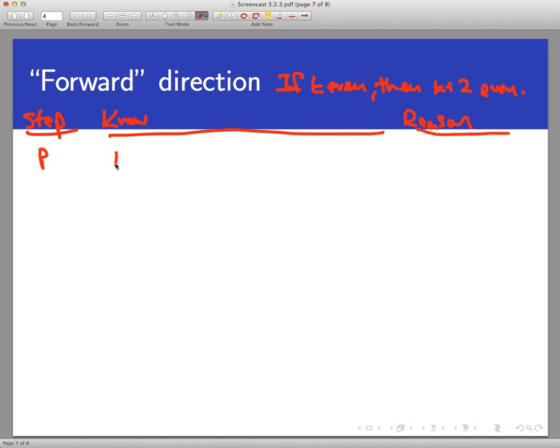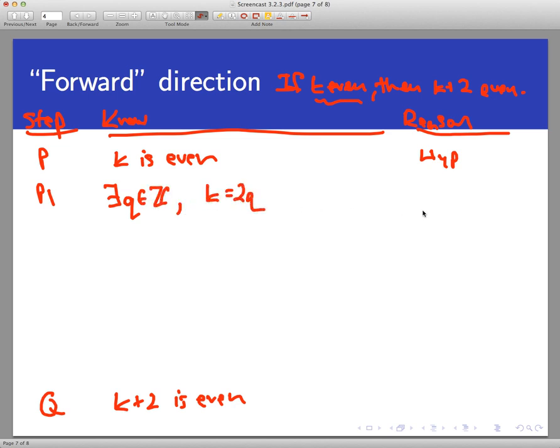The main thing here is to understand the structure of the if and only if. So let's start by assuming the hypothesis. Let's assume k is even. A direct proof, so we are just assuming the hypothesis and that is the reason. The last step of the proof is going to be the conclusion that k plus 2 is even. So now the flow of this nosure table ought to be pretty familiar to us.